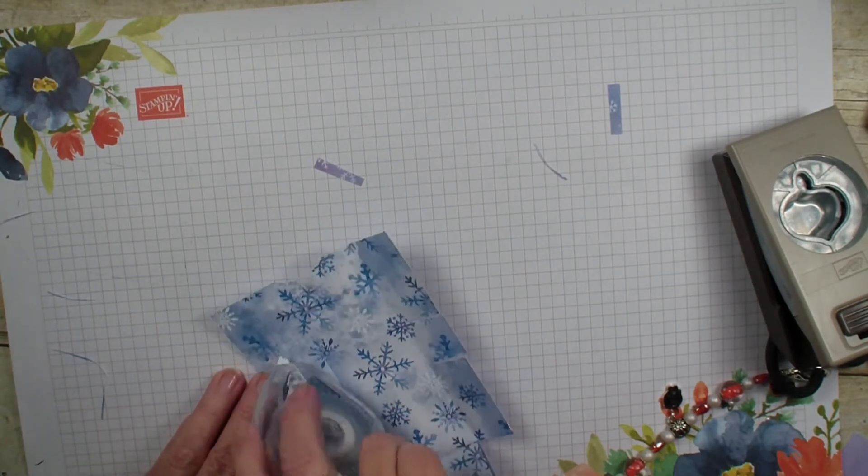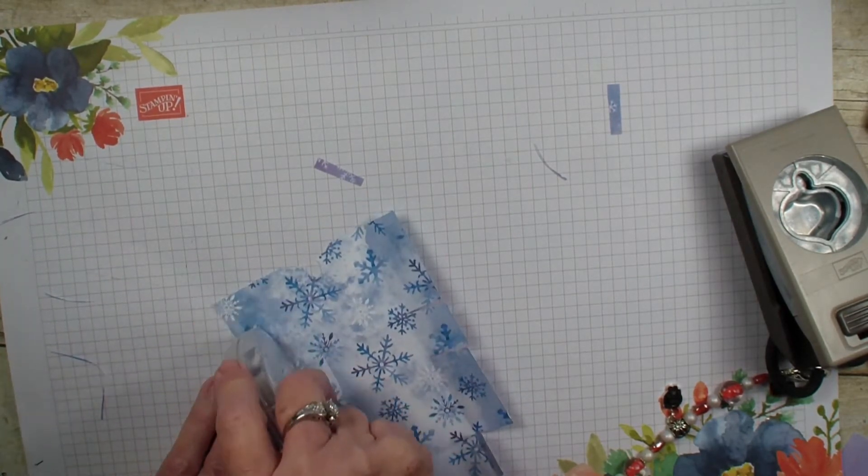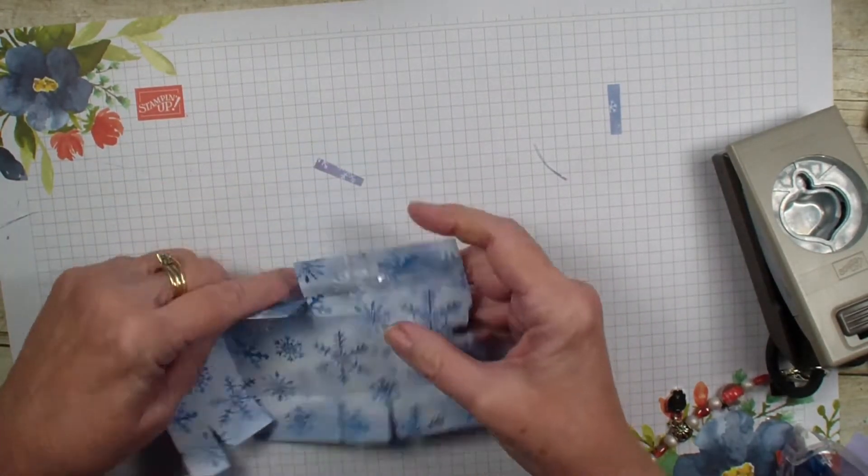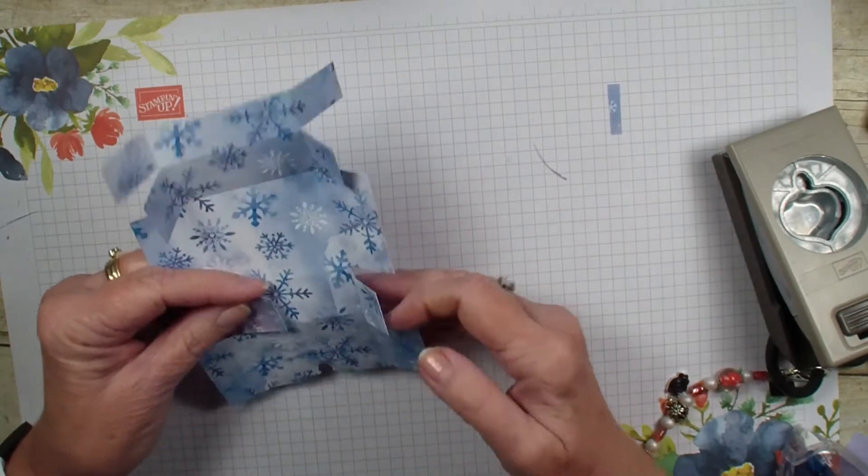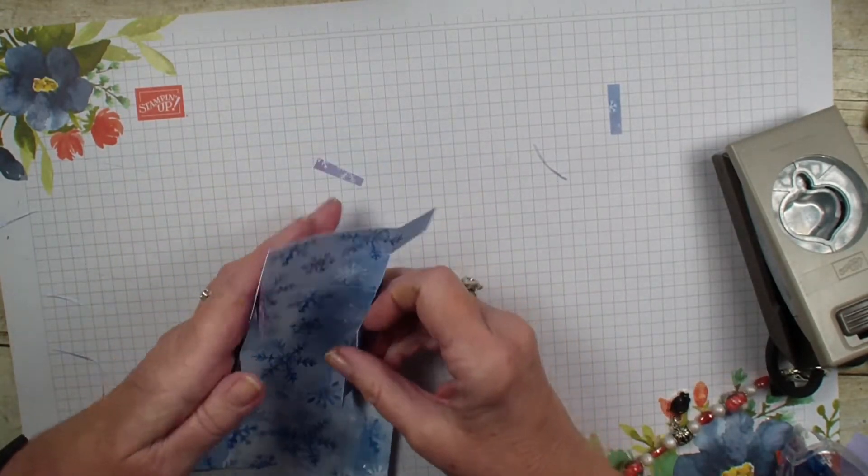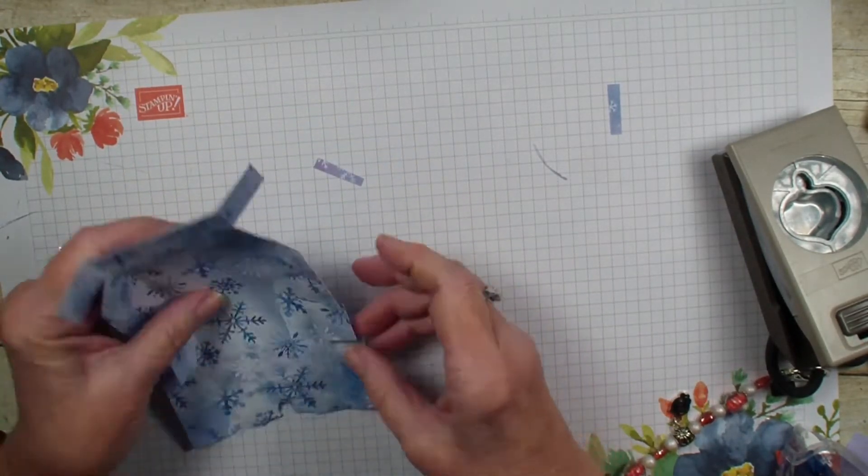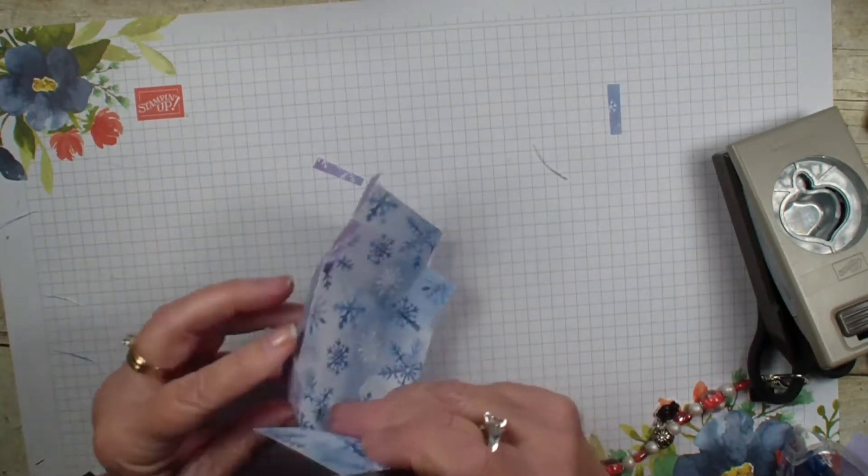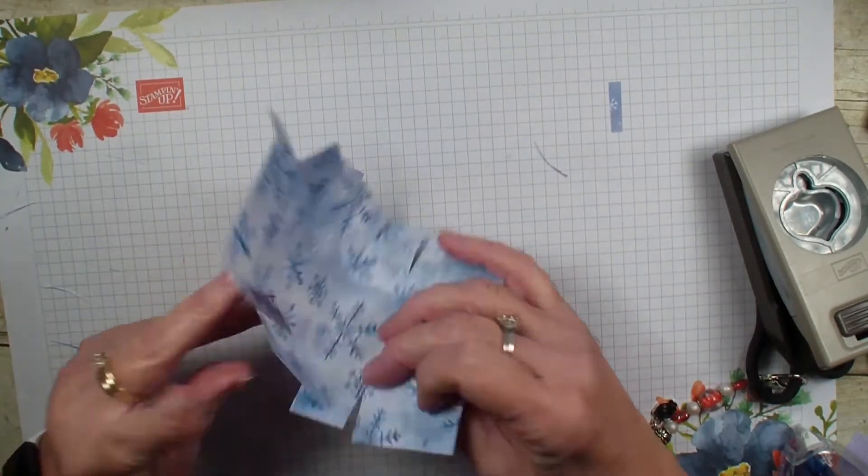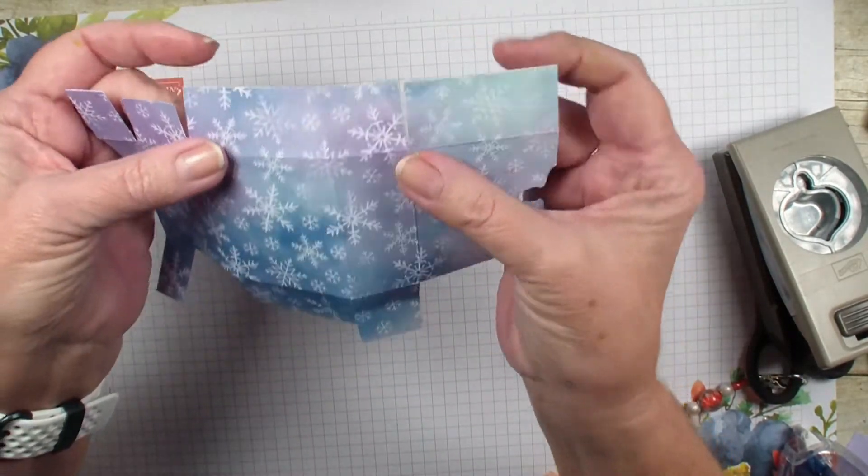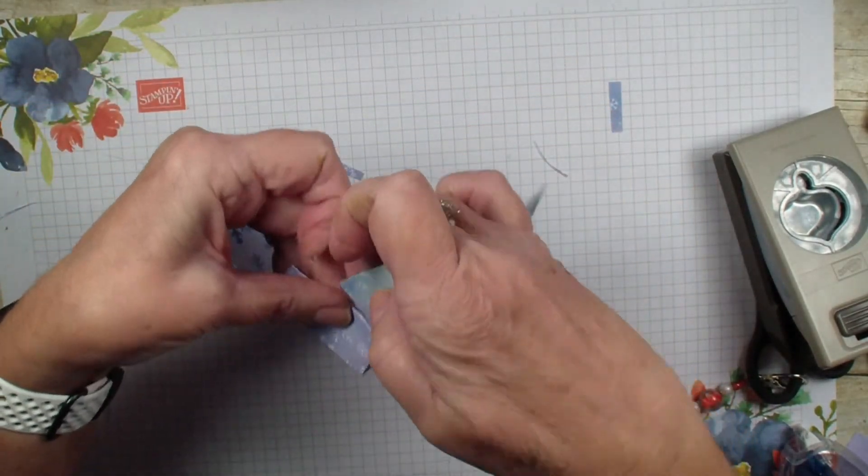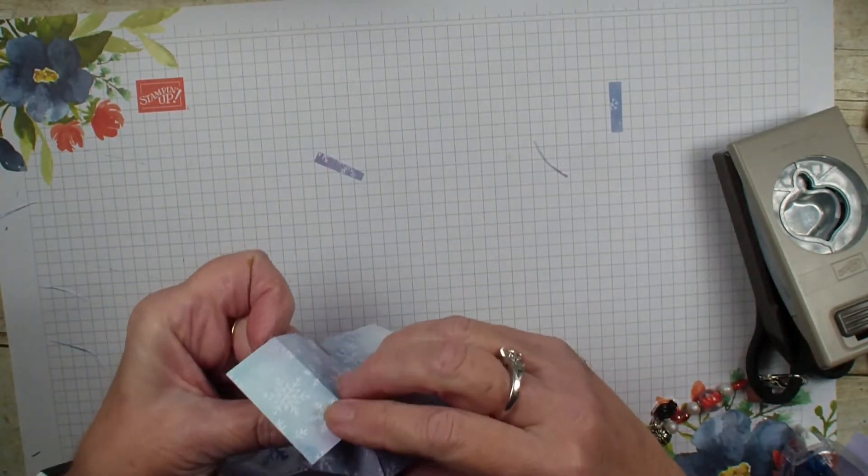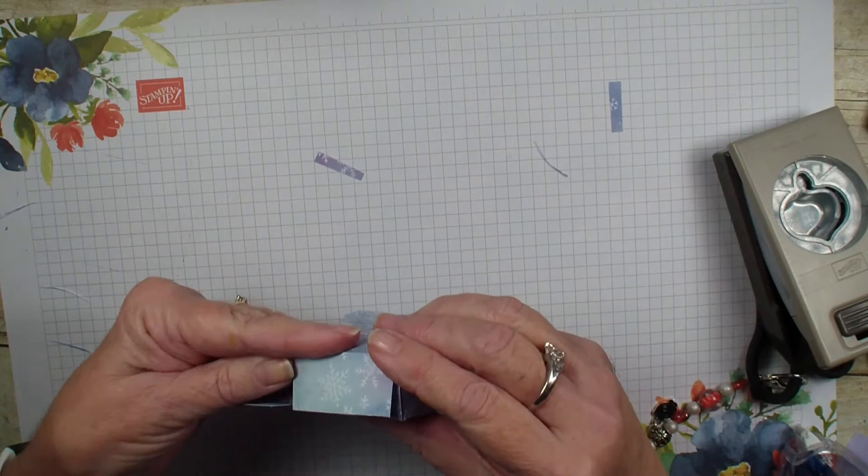We are going to put tape along that bigger cutout section. I am using the Stampin' Seal Plus because I want it to be nice and strong. We are just going to work our box up like so. I am only putting tape on that one side, so I am just going to take the flap and push that in and then bring the flap with the adhesive down over top.